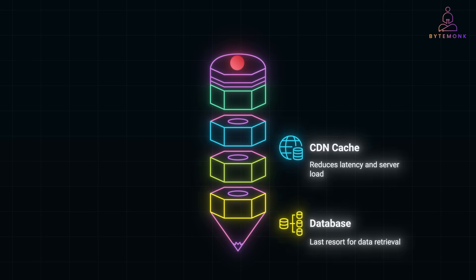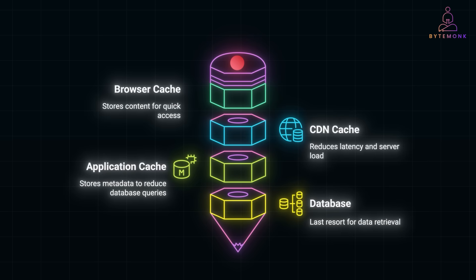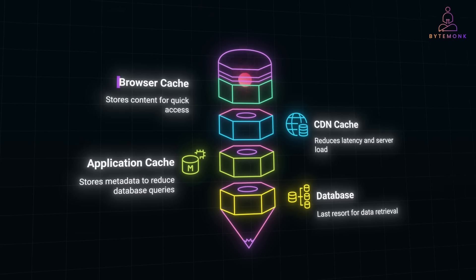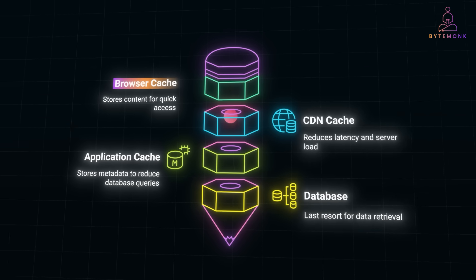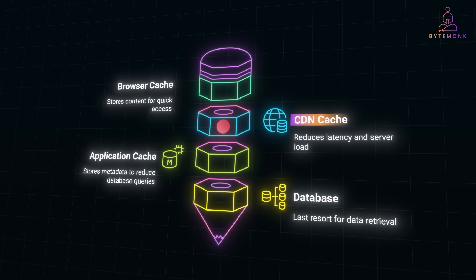Imagine a user requesting a product image on an e-commerce website. The journey involves multiple layers of caching. When the user's browser first loads the image, it stores it in a local cache. If the user revisits the page, the browser retrieves the image locally without contacting the server — the fastest layer of caching, ensuring instant access for repeated requests. If the browser cache doesn't have the image, the request is forwarded to a CDN (Content Delivery Network), a globally distributed network of servers that caches and serves content like images, videos, and static files. For example, a user in London might be served from a UK CDN server rather than the origin server, reducing latency.